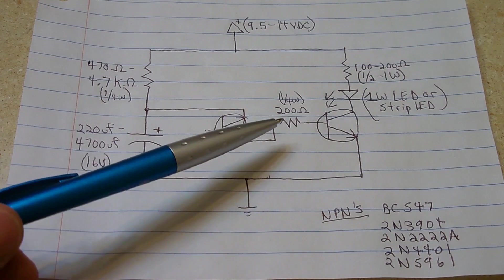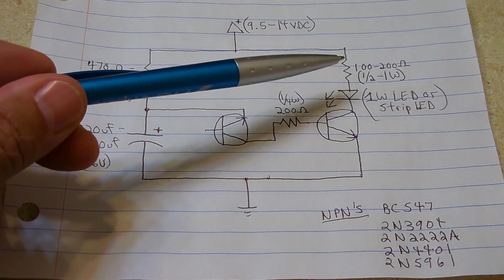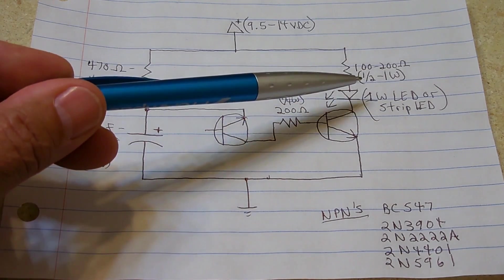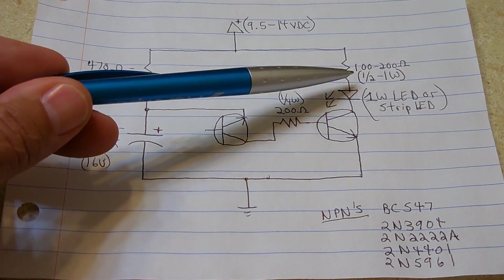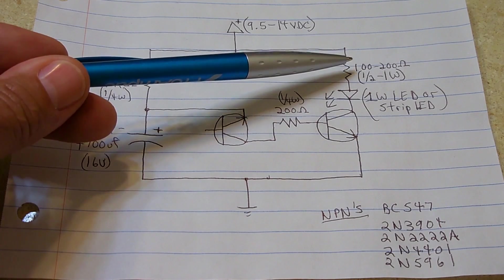Right over here, you have a 200 ohm quarter-watt resistor. Up here is a 100 to 200 ohm. You can judge what you need. Half watt to 1 watt. You're definitely going to want to use half to 1 watt.